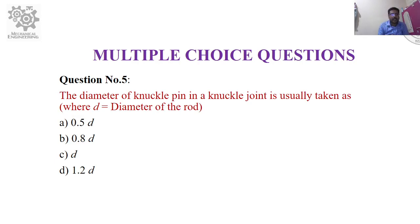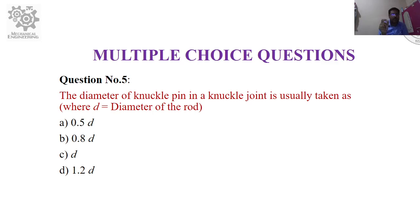Question number five: The diameter of the knuckle pin in a knuckle joint is usually taken as — where d is the diameter of the rod. Options: A) 0.5d, B) 0.8d, C) d, D) 1.5 to 1.2 times d. Guess your answer.